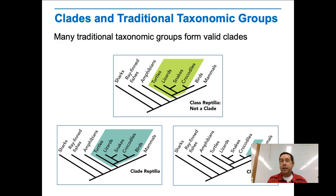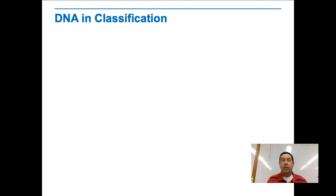Many traditional taxonomy groups do form valid clades — we call those monophyletic groups. But not all traditional classification systems form a clade. Protists, for instance, do not; they're paraphyletic. One characteristic used a lot in evolutionary classification is looking at DNA sequences, genes, and protein sequences. Molecular biology is a big part of modern evolutionary classification.